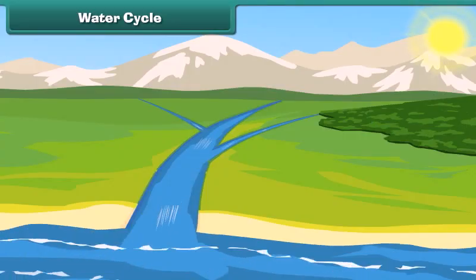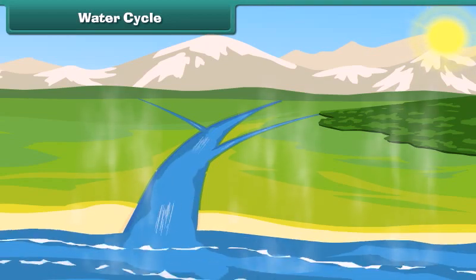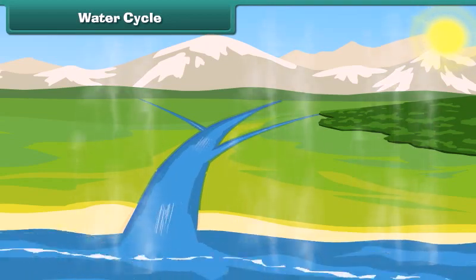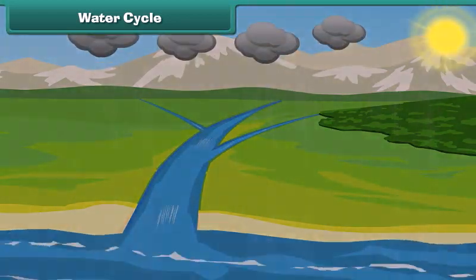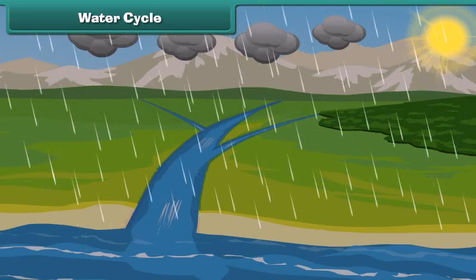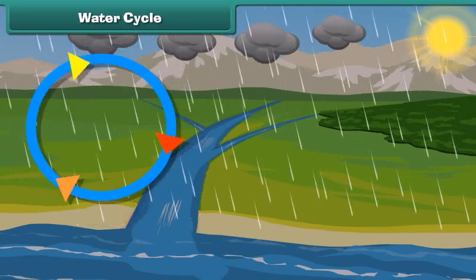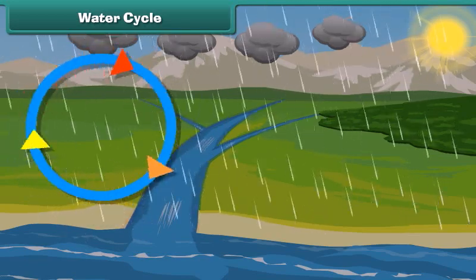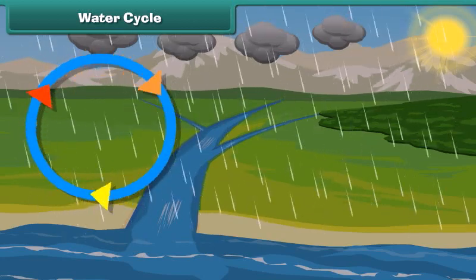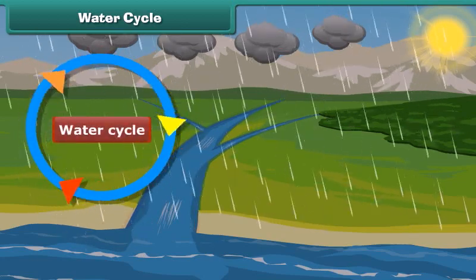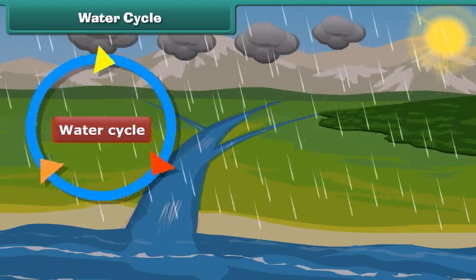Finally, the water reaches the water bodies and gets collected there. You can see water is constantly cycling from land to air and back to land again. This process is known as the water cycle. Therefore, kids, water on our earth will never come to an end.